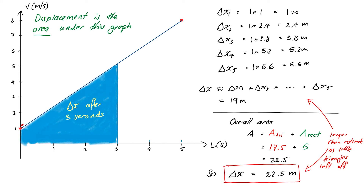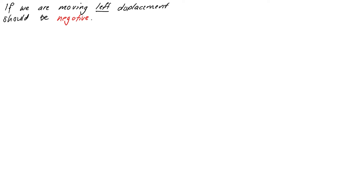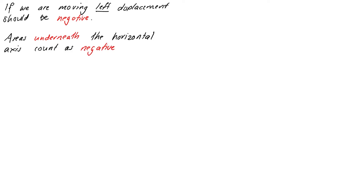We haven't covered everything yet — what happens when we are moving left? If we are moving to the left, our velocity is going to be negative, and we should expect negative displacements as well. Areas are normally always positive, so to account for this, areas underneath the horizontal axis are counted as negative in our overall calculation. The easiest way to see how this works is with an example.